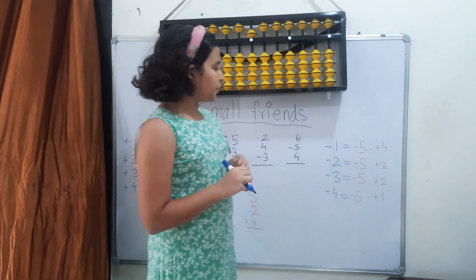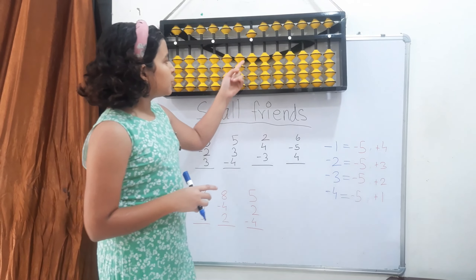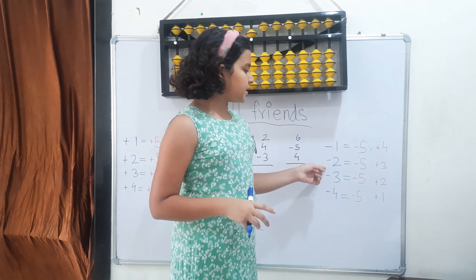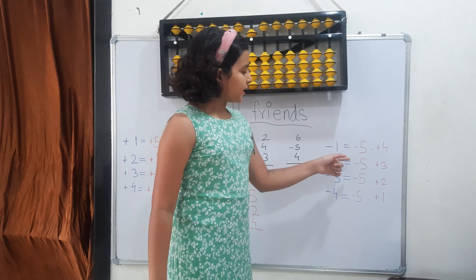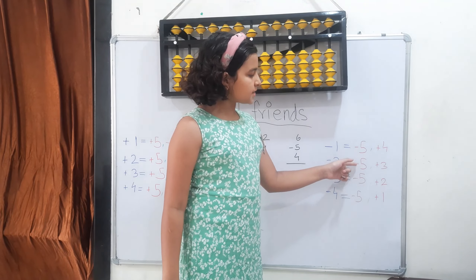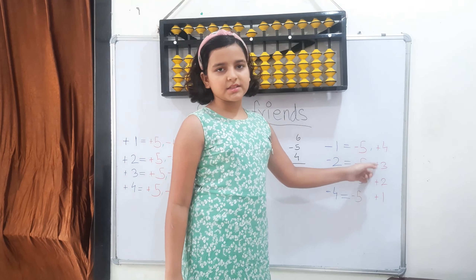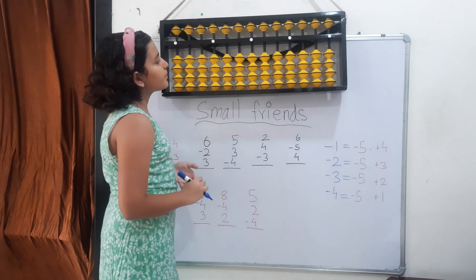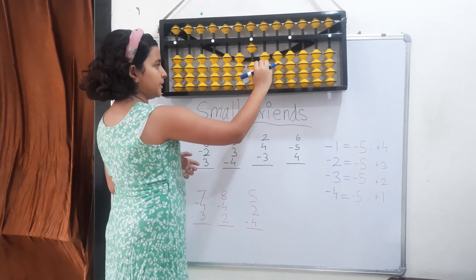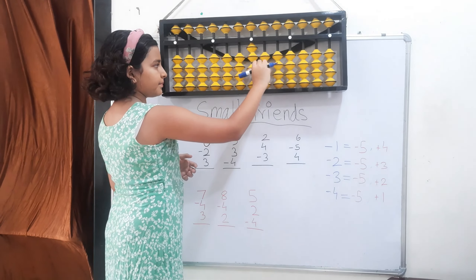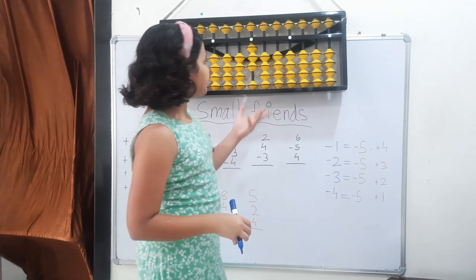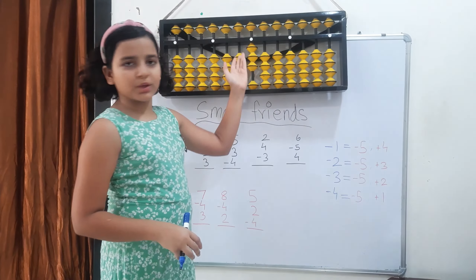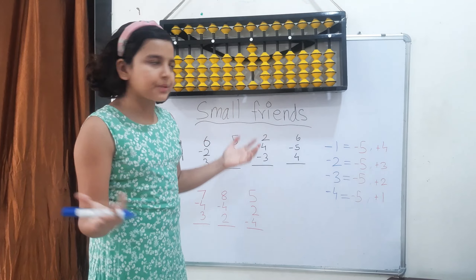Next, minus 2. We have no bits over here. So minus 2 equals minus the 5 plus the 3. Minus the 5 and plus the 3. So 5 minus 2 equals 3 if we do it mentally.